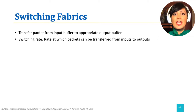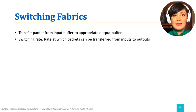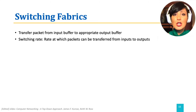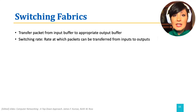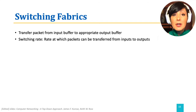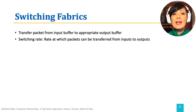The switching fabric transfers packets from input ports to the appropriate output ports. The rate at which switching takes place decides the rate of service at the router, and is different based on the technology used. However, it is desirable that our router is able to handle all incoming packets at the line rate. Therefore, if the number of input ports is n, it is desirable that our switching fabric is capable of switching at n times the port line rate.